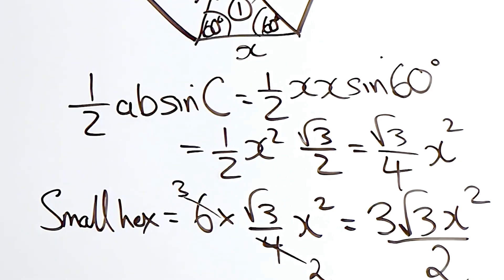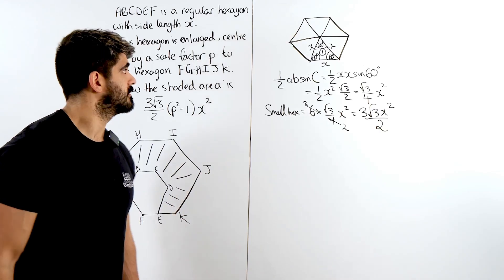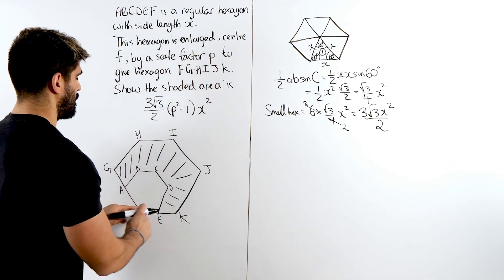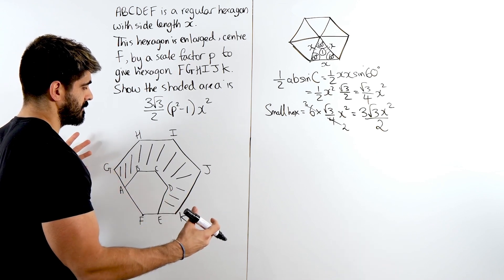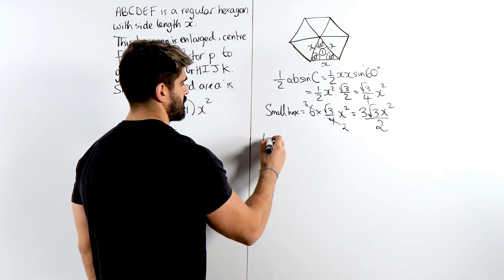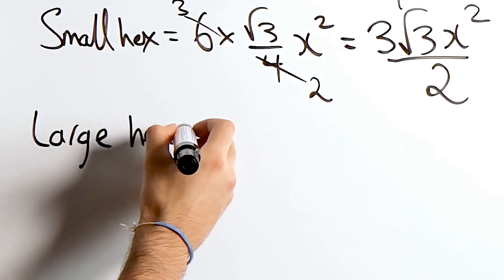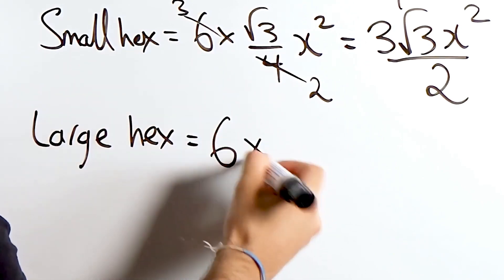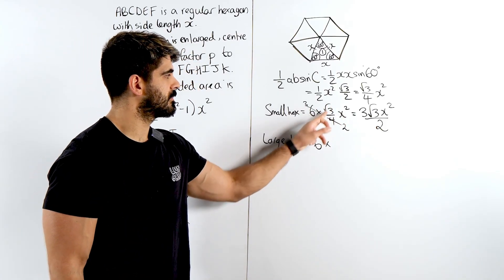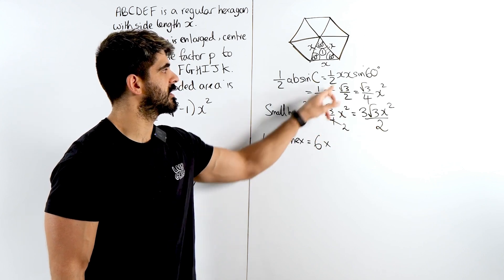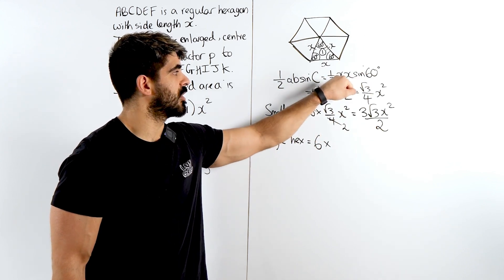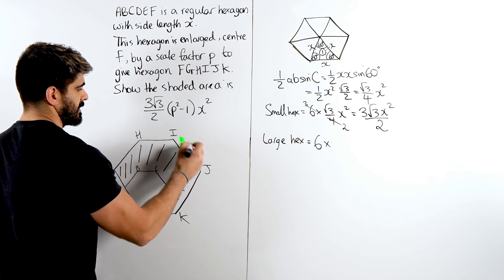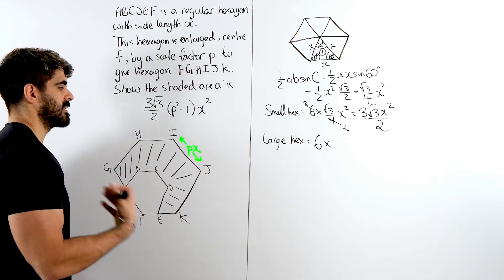Now, for the big hexagon, we just do the exact same thing. It's just the side lengths have changed. We're increasing by a scale factor of P, meaning we're multiplying all these lengths by P. So for the large hex, we're just going to do the same thing. So we're going to do 6 lots of this, but it's not X anymore, it's PX. So this side length here is PX everywhere, because we've enlarged it by a scale factor of P.